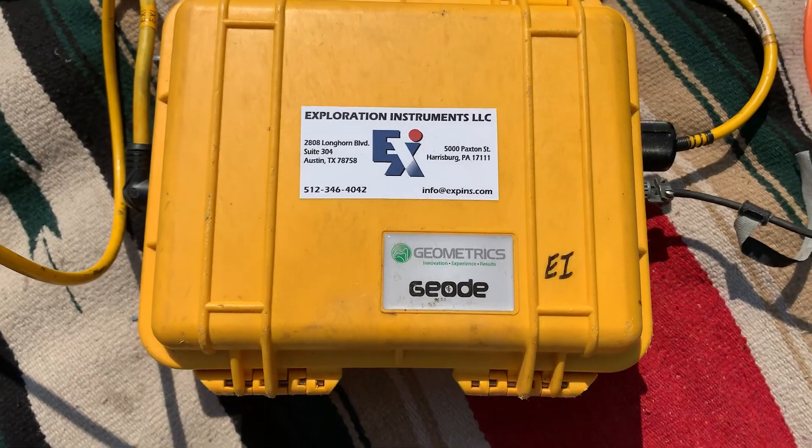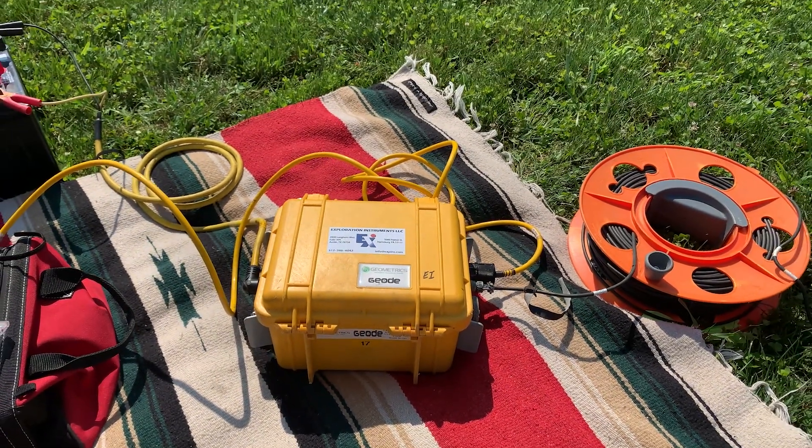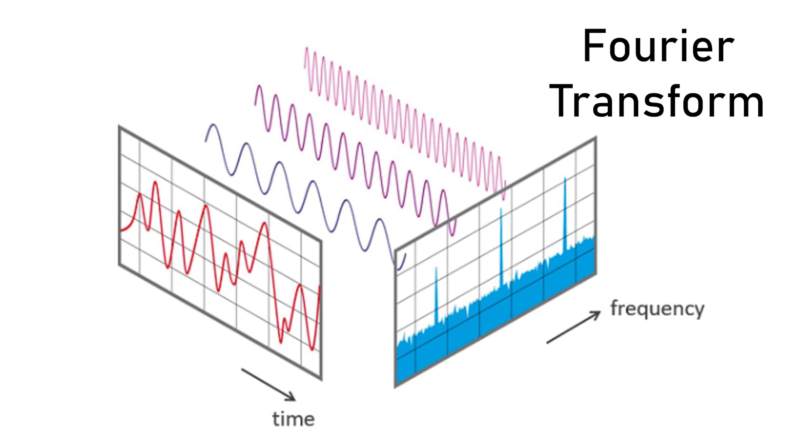A seismograph will record the frequency and velocity of all seismic waves that it encounters, and it can split the unified wave data it records into many constituent waves of calculated velocity, amplitude, and frequency by using a Fourier transform.